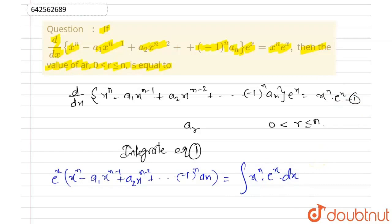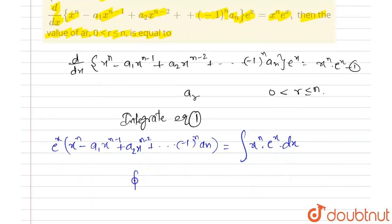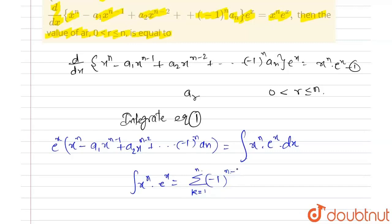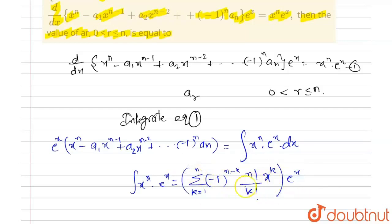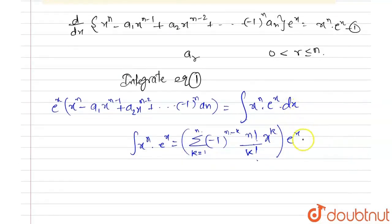Now we know that the integration of x^n · e^x equals the summation from k = 0 to k = n of (−1)^(n−k) · n!/k! · x^k, and the whole expression is multiplied by e^x. This is the integration of x^n · e^x.